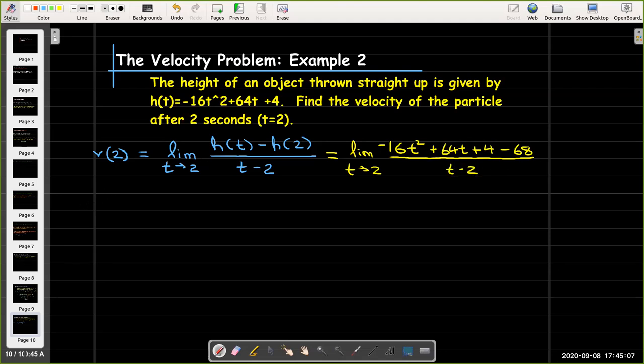Let's collect the like terms here. We have the limit as t approaches 2 of negative 16t squared plus 64t minus 64 all over t minus 2. So let's see if this quadratic expression in the numerator will factor. I'll start by factoring a negative 16 out of the numerator.